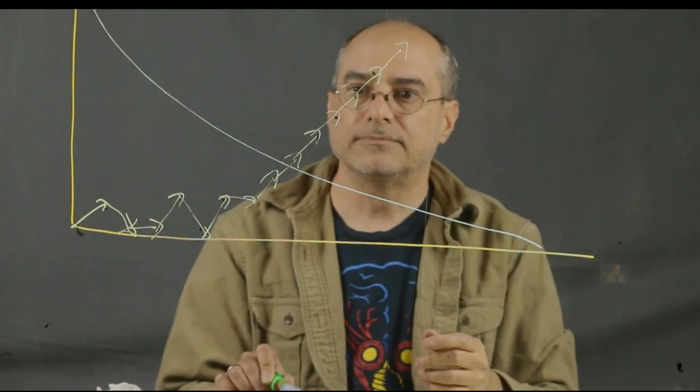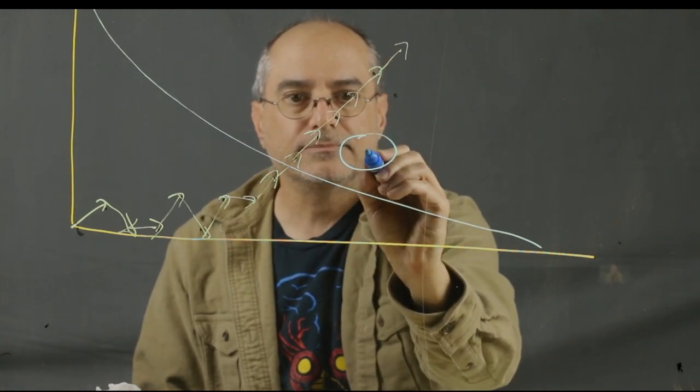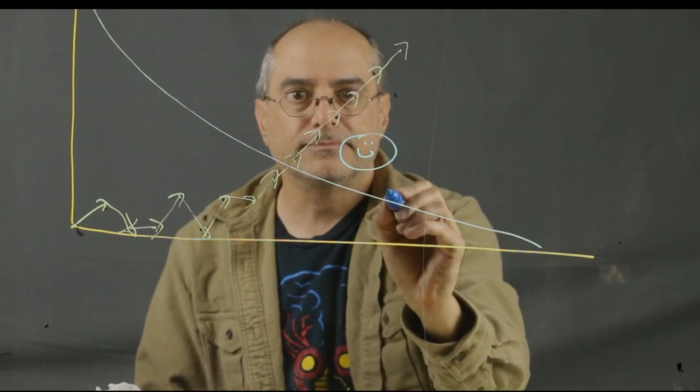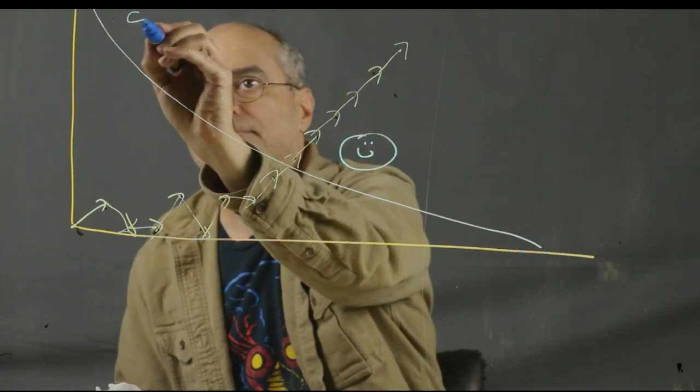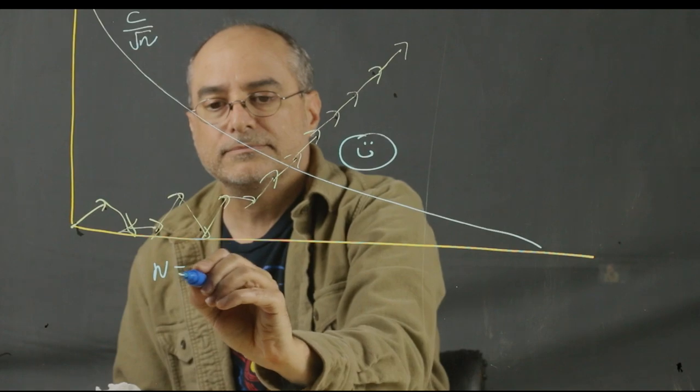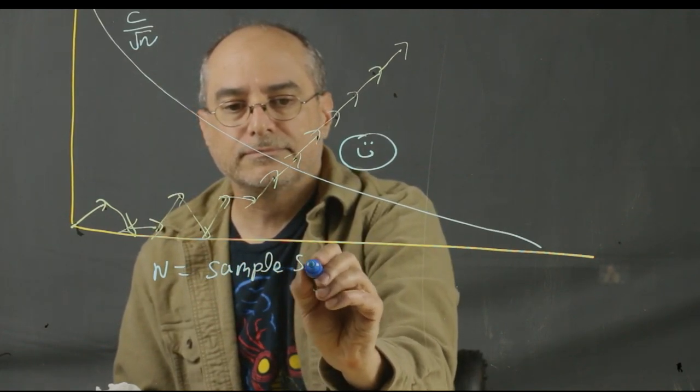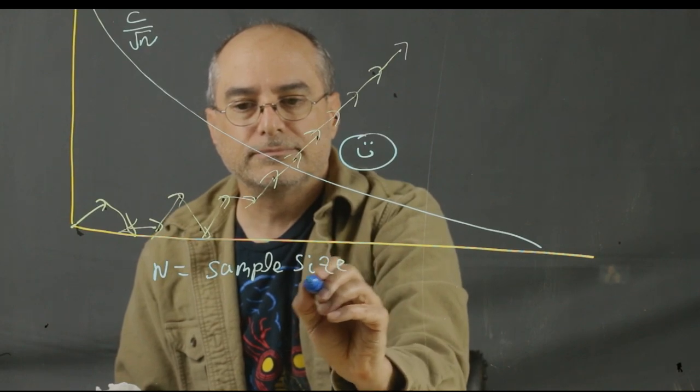Now, how do we decide when to stop the experiment? We have this blue theoretical line, and when we cross over it in our up-down annotation of the samples, we say we have definitively shown our effect is stronger than what we're able to measure at this time. Our ability to measure increases with the sample size.